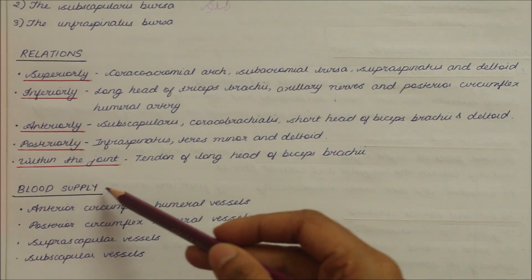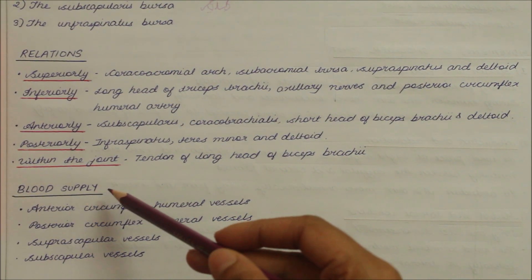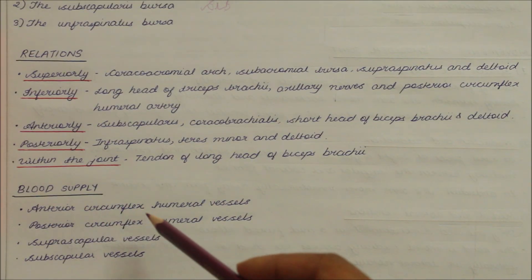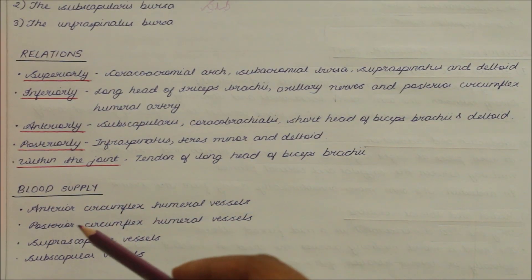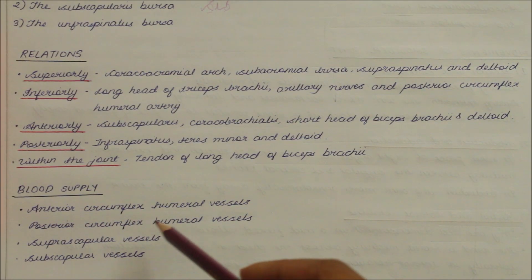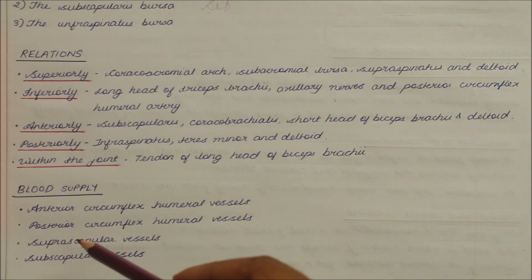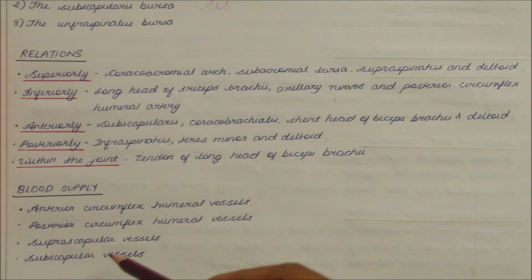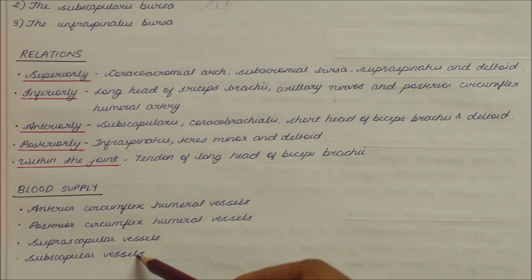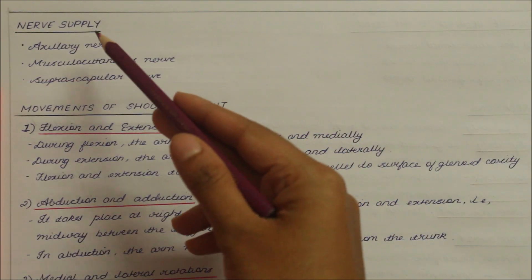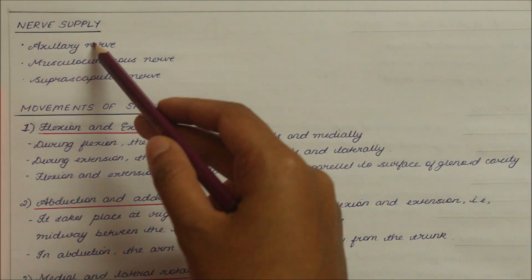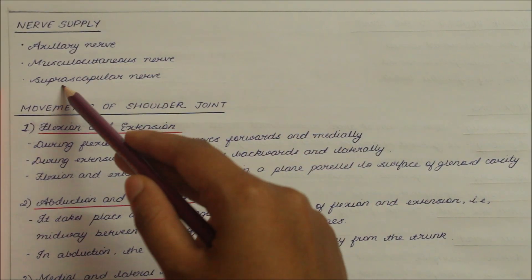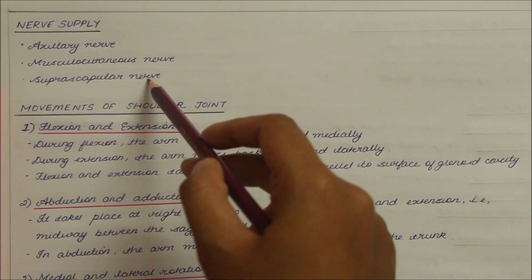Moving on to the blood supply to the shoulder joint: we have the anterior circumflex humeral vessels, the posterior circumflex humeral vessels, the suprascapular vessels, and the subscapular vessels. The nerve supply is by the axillary nerve, the musculocutaneous nerve, and the suprascapular nerve.